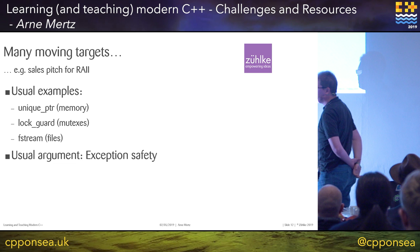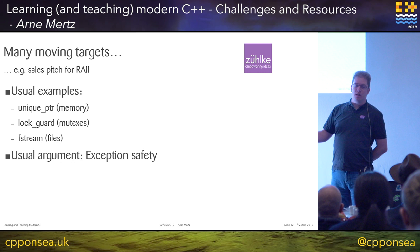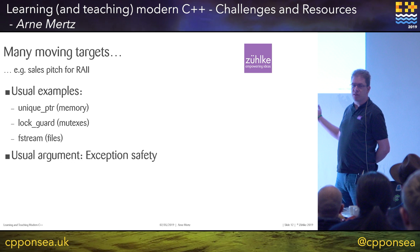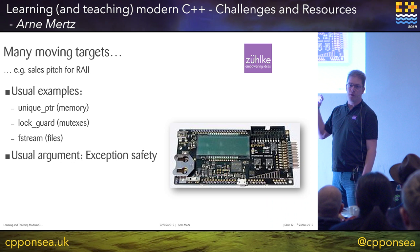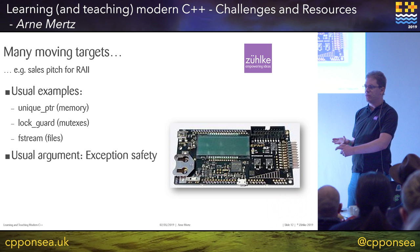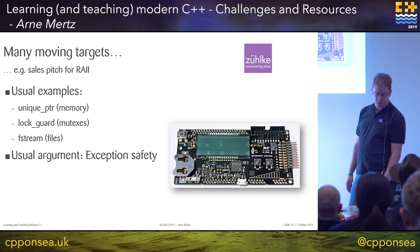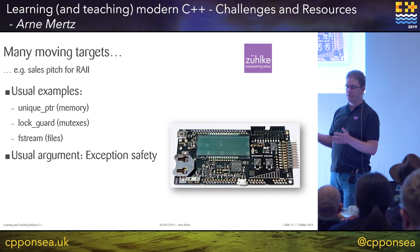For example, consider a sales pitch for RAII. The standard examples are smart pointers for memory, lock guards for mutexes, and file streams to close files, with exception safety as the usual argument. But tell that to people working with small devices — no heap memory, no threads, no mutexes, no file system. They just turn off exceptions. But RAII is still useful, for example for early returns from functions and cleanup. So it's hard to come up with general advice for all these different people.